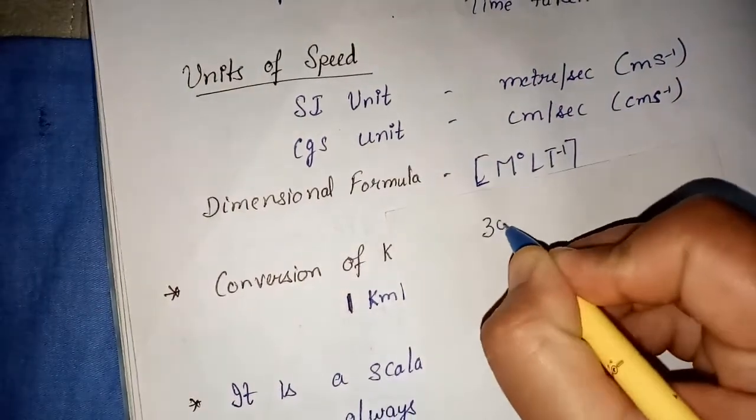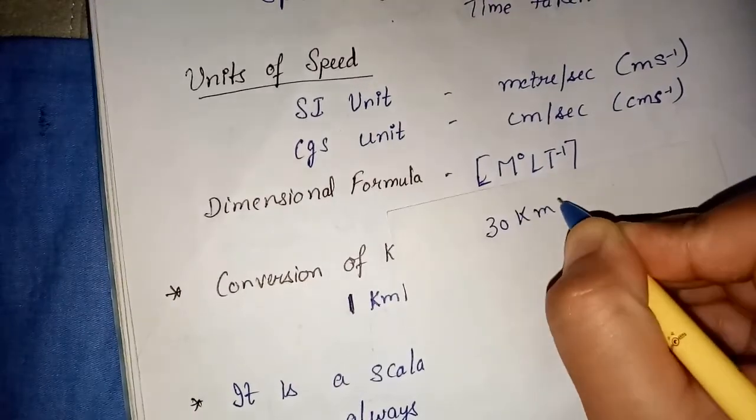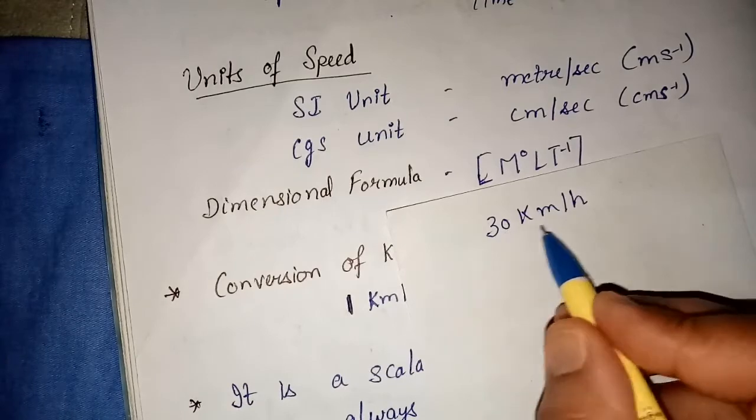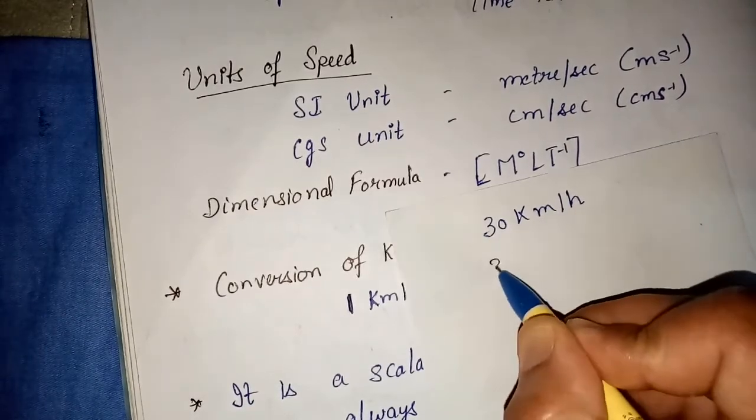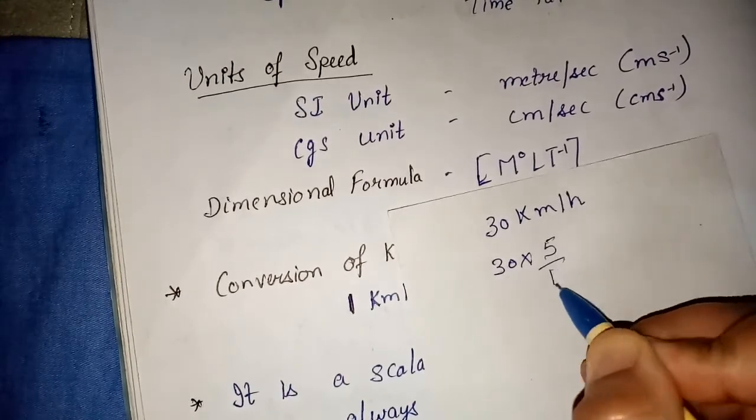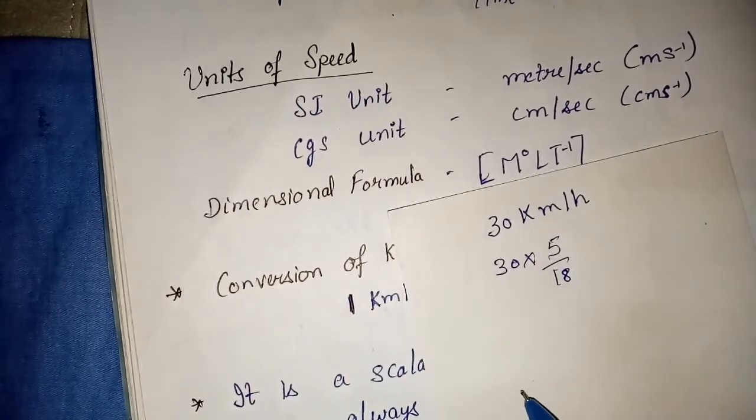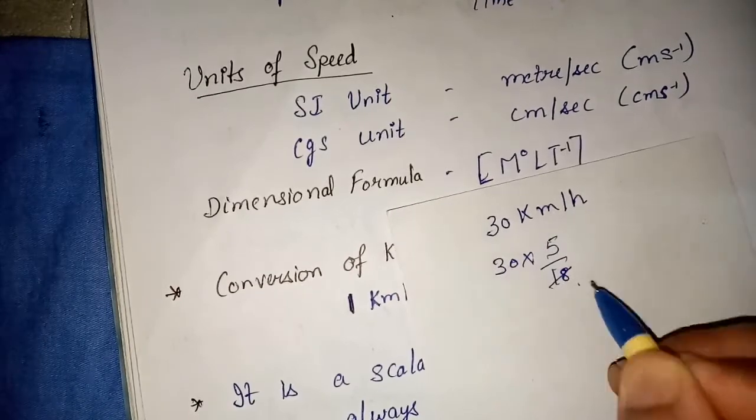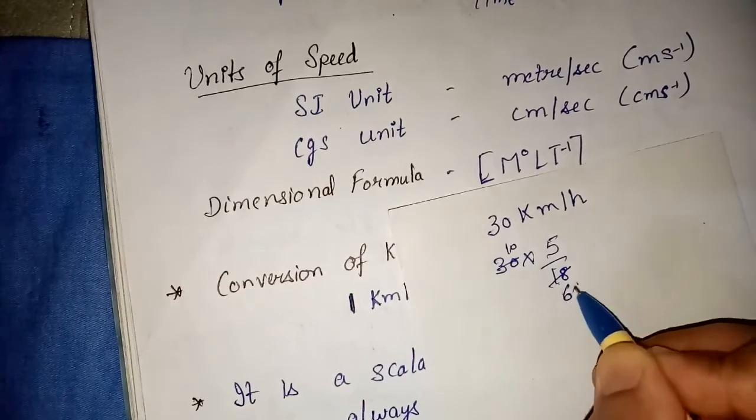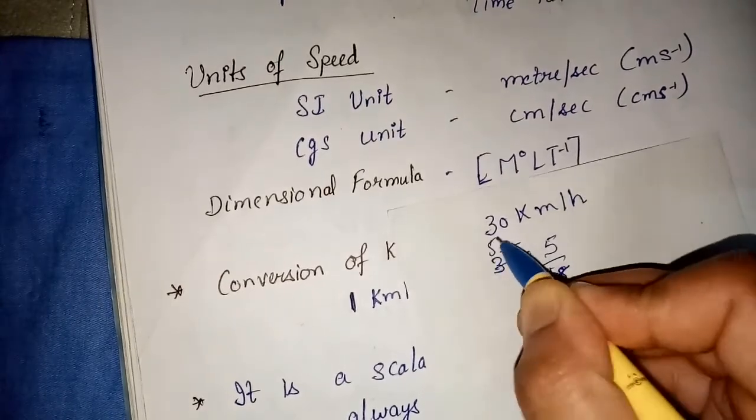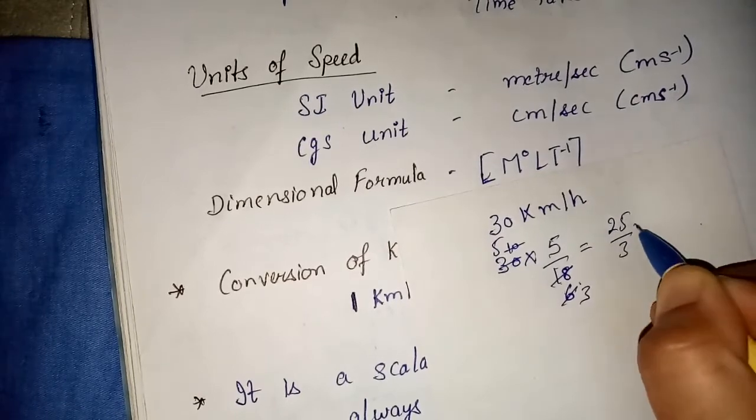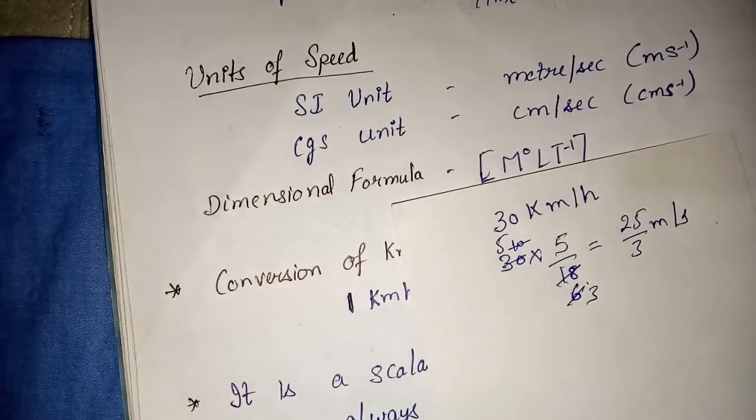For example, you have speed given as 30 kilometer per hour and you have to convert this speed in meter per second. So how do you do? You will multiply 30 by 5 by 18 and we will get the answer. So it will be cancelled out by 3, 3, 6, 18 or 2, 3, 6, 2, 5, 10. So you will get 5 into 5, 25 by 3 meter per second.